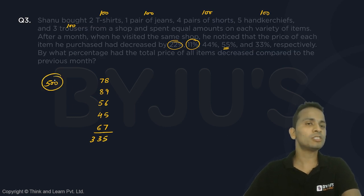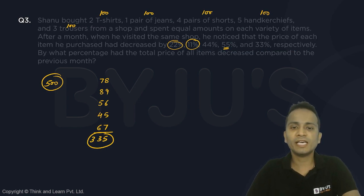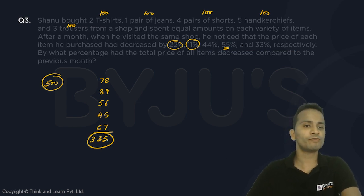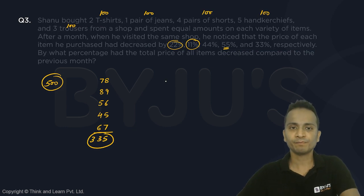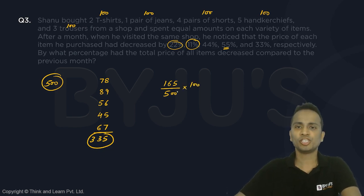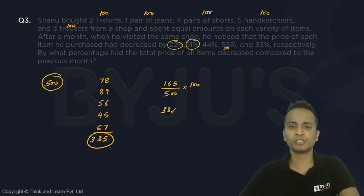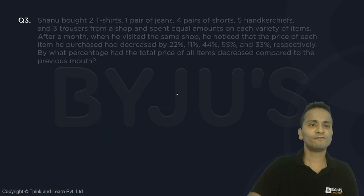Originally the person spent 500; now the total is 335. So there is a reduction of 165. That is 165 reduction over the initial value of 500, multiplied by 100, gives the percentage decrease. So 165 divided by 5 is 33%. So 33% is the final answer for this question.